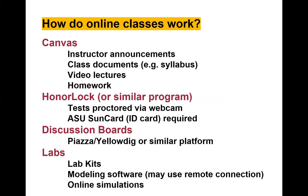Online classes use Canvas, where you'll find instructor announcements, class documents like your syllabus, video lectures, and homework. We also have proctored exams via webcam — currently using HonorLock or a similar program — and you'll need a webcam and an ASU Sun Card ID or government-issued photo ID. Discussion outside class may use a Piazza or YellowDig platform. Labs use modeling software with remote connections or online simulations. You will be required to buy a lab kit for EEE 202 and EEE 334, your circuit series — details will be in your syllabus.